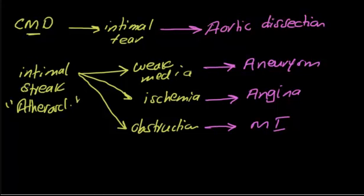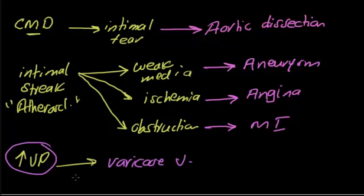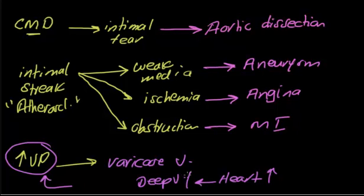The final thing about the vascular system: when you have increased venous pressure, the disease will be varicose veins. Why increased venous pressure? Because the heart has higher pressure, this transfers to the deep venous system, causing high pressure in the deep venous system.